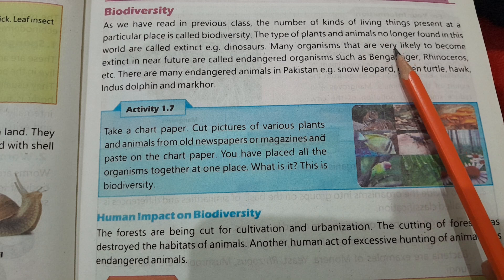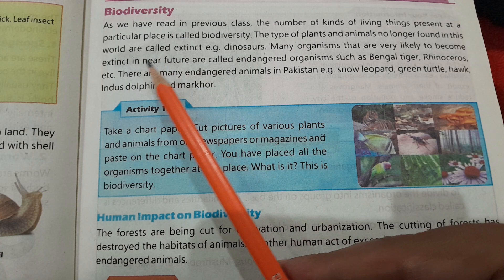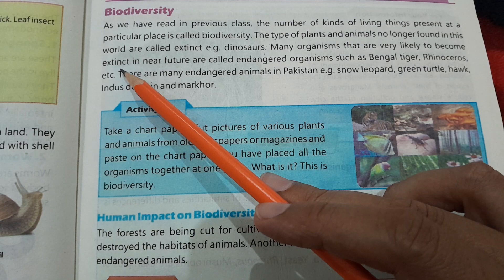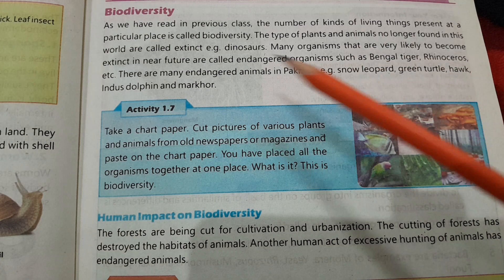Many organisms that are very likely to become extinct in the near future are called endangered organisms, such as the Bengal tiger and rhinos. اور کچھ جانور ایسے ہیں جن کی نسل ختم ہونے کا خطرہ ہے — تو ایسے جانوروں کو ہم کہتے ہیں کہ یہ خطرے میں ہیں۔